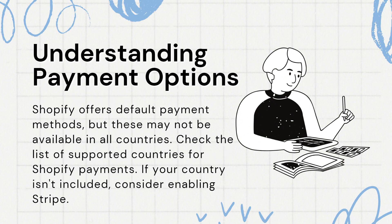Number 3: Understanding Payment Options. Shopify provides default payment methods, which may vary in availability depending on your country. To determine if your country is supported for Shopify Payments, refer to the list of supported countries provided by Shopify. If your country is not on the list, you can still accept payments by integrating Stripe, a widely used payment gateway. Enabling Stripe allows you to receive payments from customers worldwide, offering a versatile solution for international transactions.